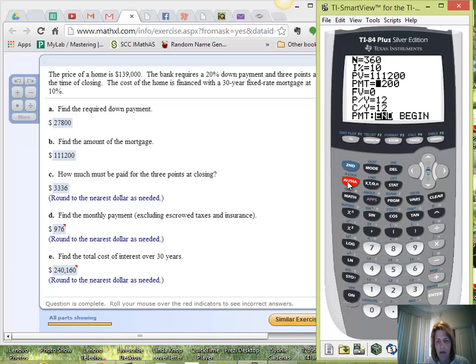So we'll come back up to payment, and if I hit alpha and enter, I get $975.86 if I round it. But in this case, we want to round to the nearest dollar, so it should be $976.